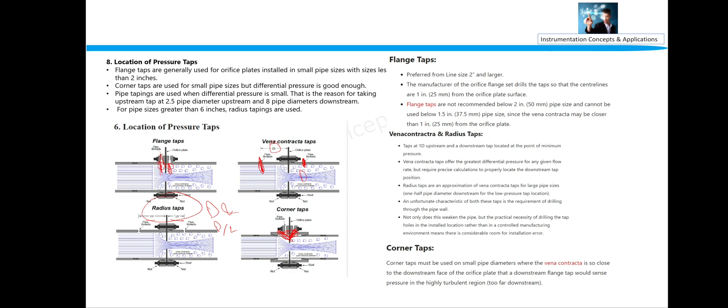What are the requirements of taps? Flange tap preferred from line size 2 inch and larger. Manufacturer of the orifice drills the tap so that the centerlines are in 1 inch from the orifice plate surface. And flange taps are not recommended below 2 inch.